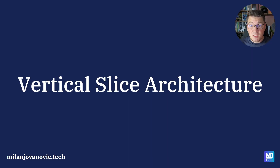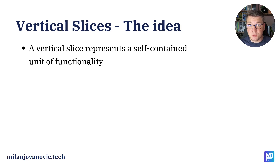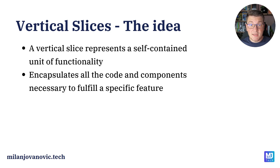Let's start by explaining what vertical slice architecture is. The main idea is organizing our application into features or use cases called vertical slices. A vertical slice represents a self-contained unit of functionality, or basically one use case inside of your application, and it contains all of the code and components required to implement a specific business functionality.